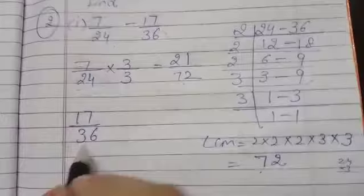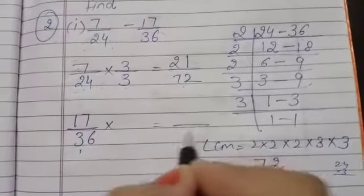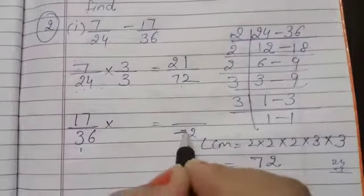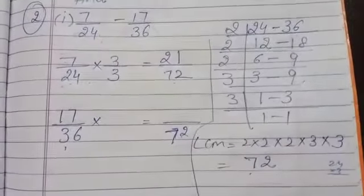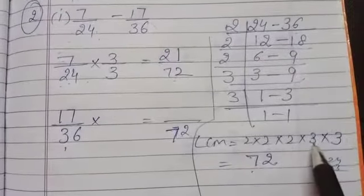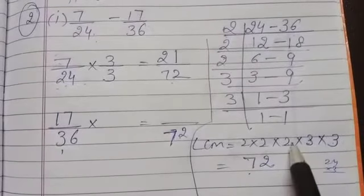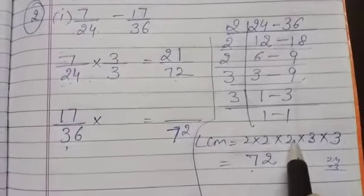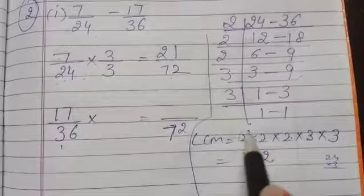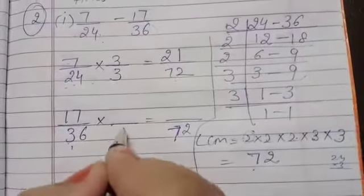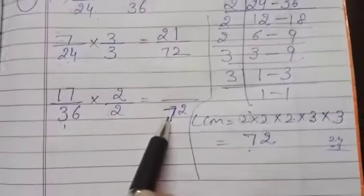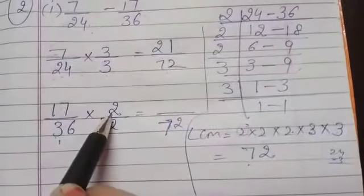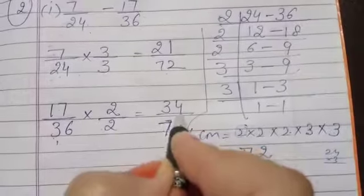Next is 17 by 36. Now 36, you can check from here: 3, 3's are 9, 9, 2's are 18, 18, 2's are 36. So that means 36, 2's are 72. 36, 2's are 72 and 17, 2's are 34. Clear?